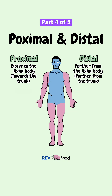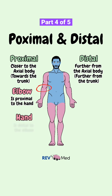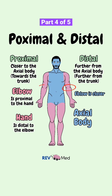So for example, we can say that the elbow is proximal to the hand, or the hand is distal to the elbow, because the elbow is closer to the axial body.